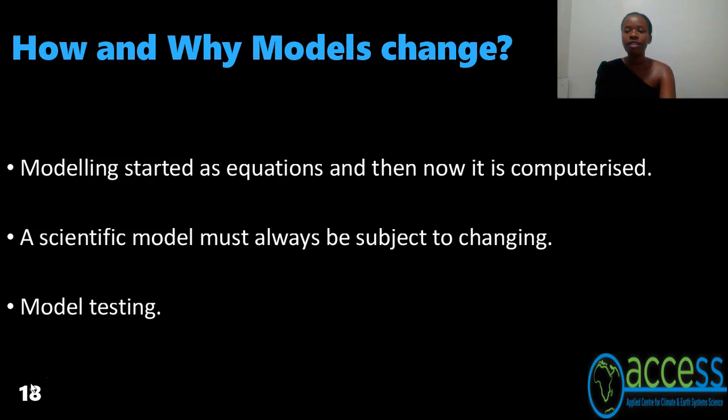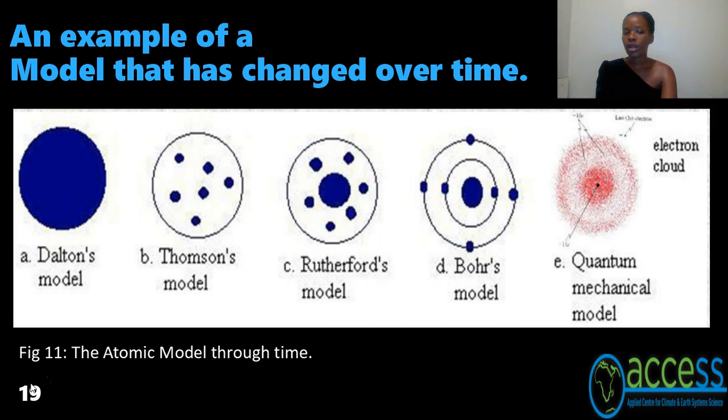Do models change over time? Yes, they do. Modeling started as equations and is now computerized. Scientists always find more information about a certain model as time goes on and understand it better than before — thus a scientific model must always be subject to change. When there's an error in a model, either the data is incorrect or the model developed is incorrect, so scientists need to do model testing.